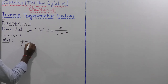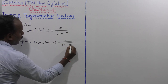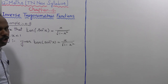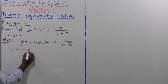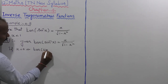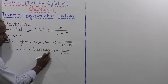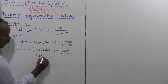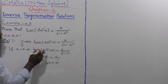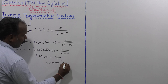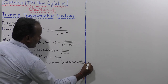Given that tan(sin⁻¹x) = x / √(1 - x²). Suppose x is equal to 0 to check the equation is satisfied. If x = 0, then tan(sin⁻¹(0)) equals 0 divided by root of 1 minus 0. Sin inverse of 0 is 0, and tan 0 is 0. So 0 equals 0, which is satisfied for both left side and right side. Hence proved for x = 0. This is equation number 1.